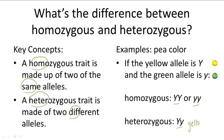Homozygous is also called pure. For example, capital Y and capital Y, or small y and small y. When the contrasting characters of each organism are mixed together — such as yellow seed and green seed — it is a hybrid organism. In homozygous, both alleles are the same, such as yellow and yellow.